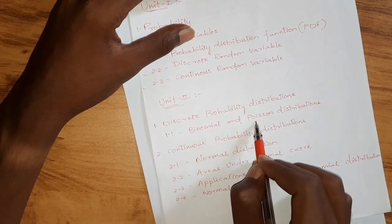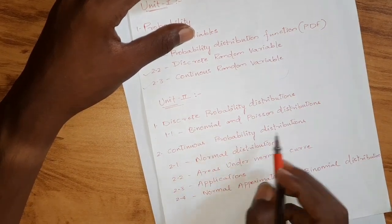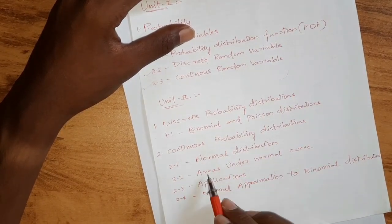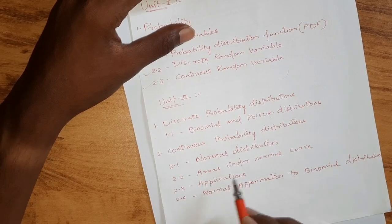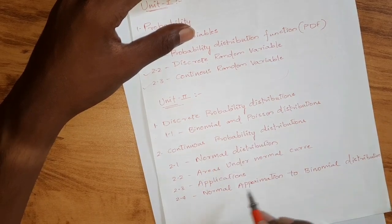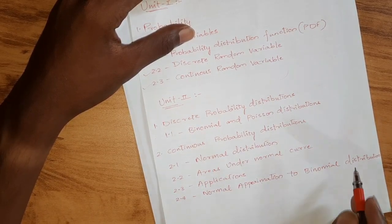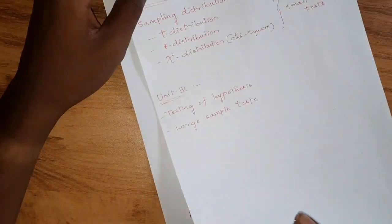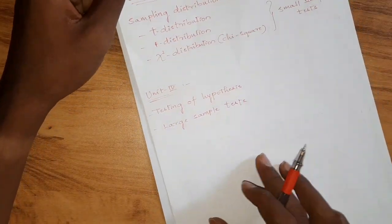For Discrete Probability Distributions, we have to discuss Binomial and Poisson Distributions — these are important concepts. For Continuous Probability Distributions, we choose Normal Distribution: Areas under the Normal Curve, Applications of Normal Distribution, and Normal Approximation to Binomial Distribution. One topic has already been uploaded as a video. You can choose it as compulsory.